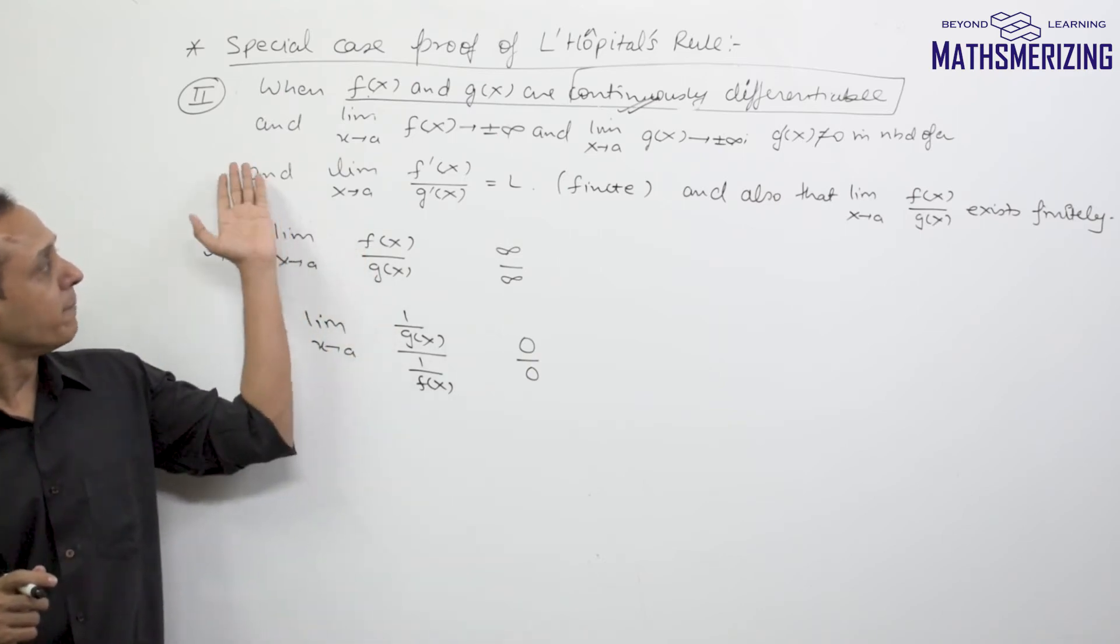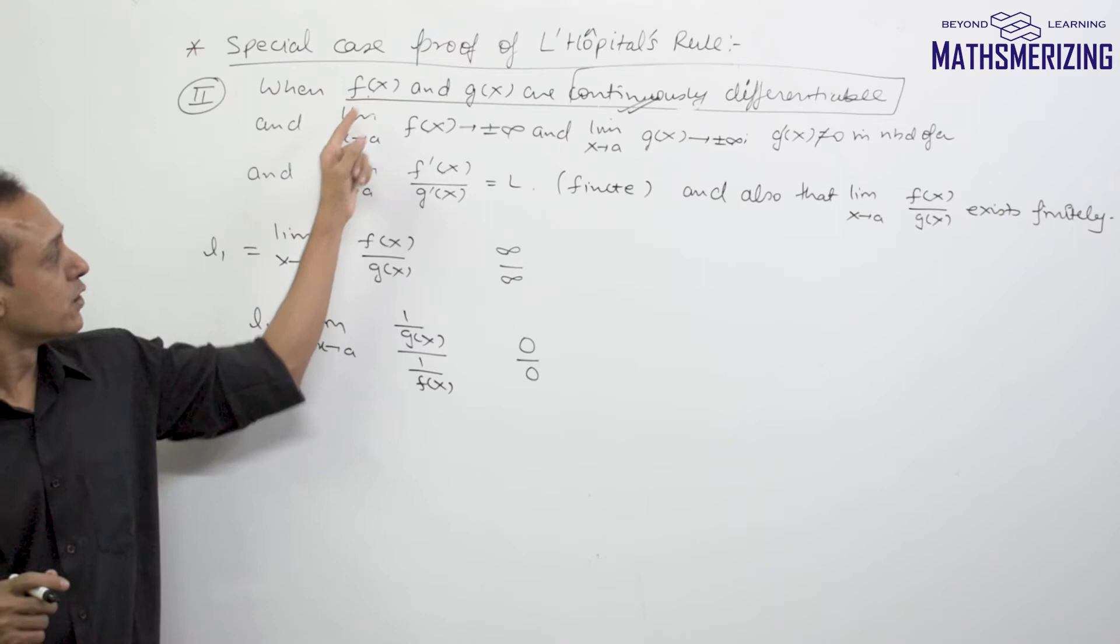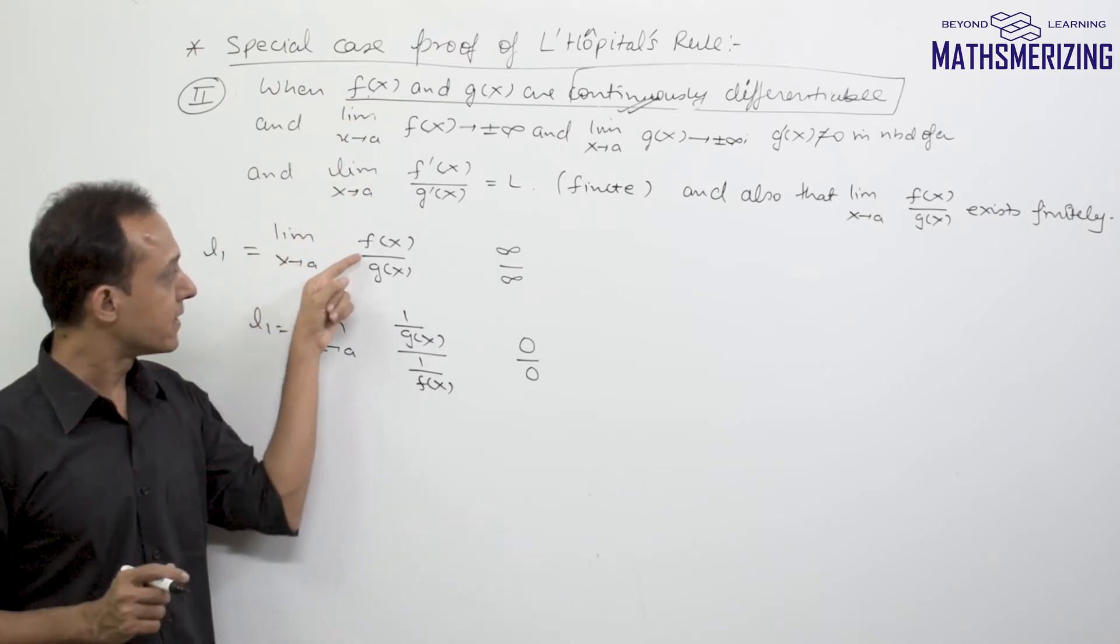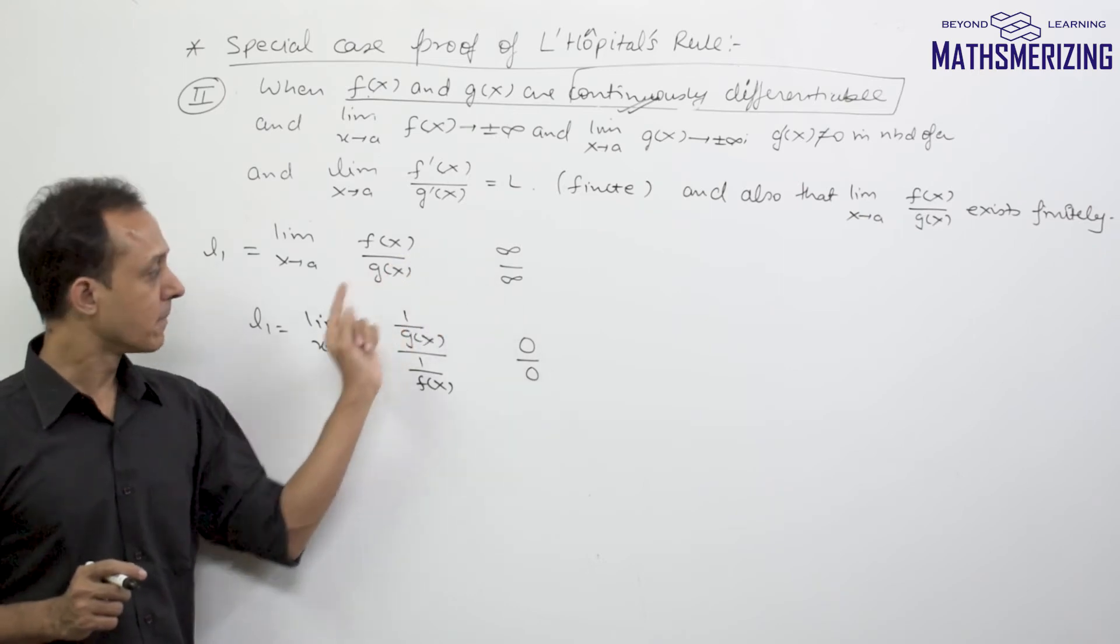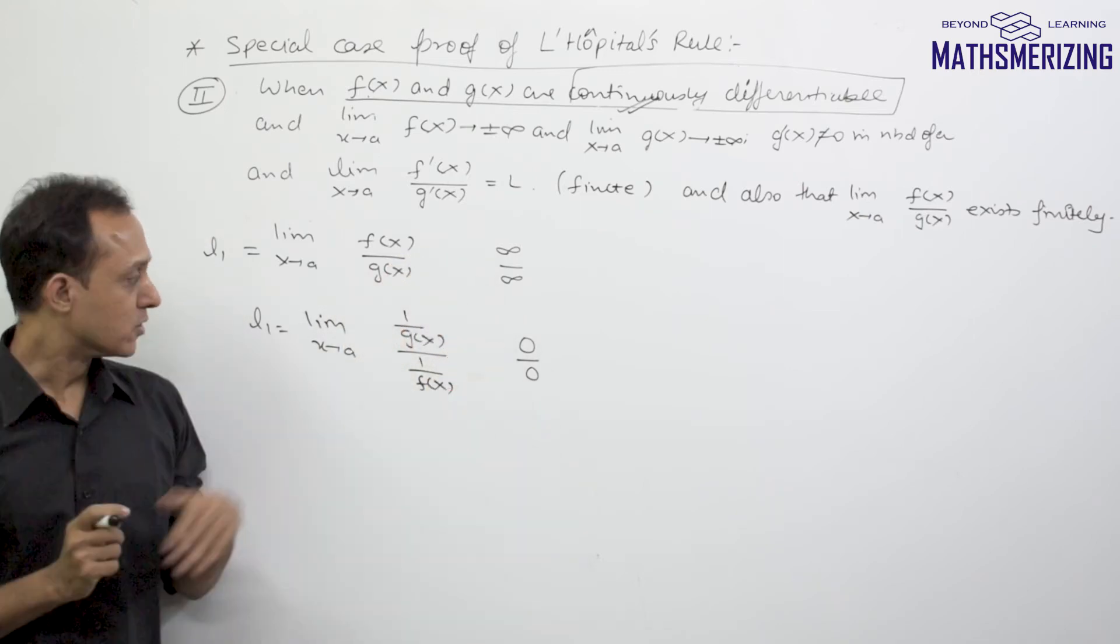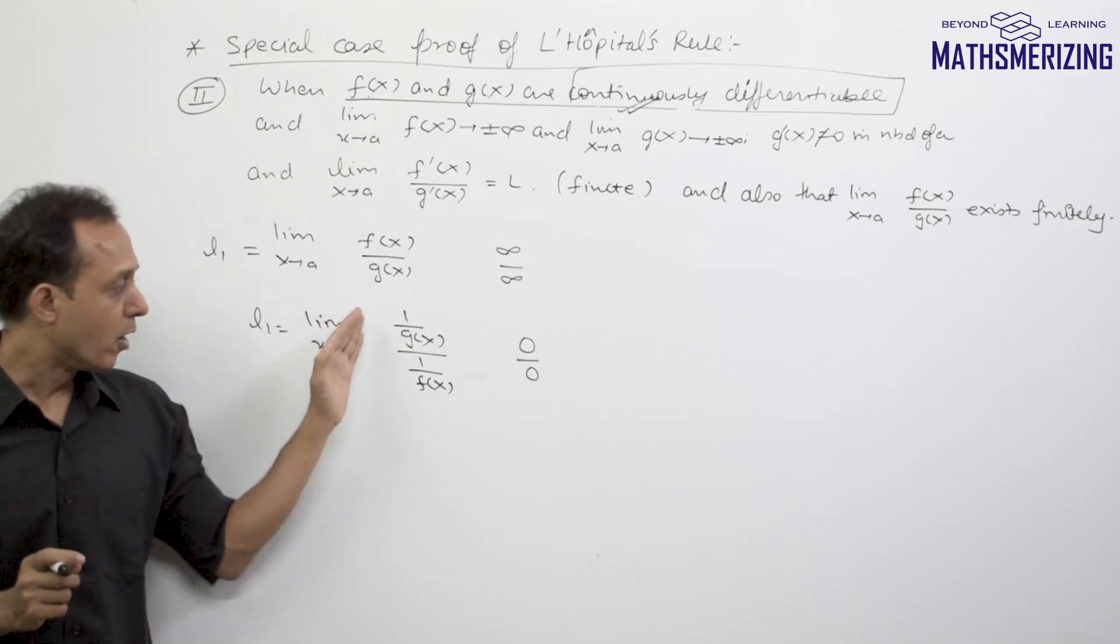Now in the first case we have already proved that this limit x tends to a of f(x) upon g(x) is equal to limit x tends to a of f'(x) upon g'(x) when it is 0 upon 0 form. So now in this case I can apply L'Hopital's rule.